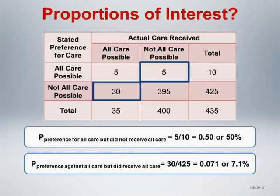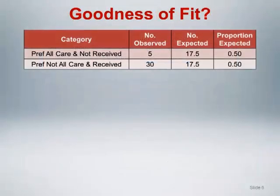If there is no structural discrepancy present in the data, then discrepancies would occur only due to random chance. If this were true, we would expect an equal number of subjects who preferred all care but did not receive it and who did not prefer all care but did receive it. In other words, misclassifications between preference and care received should occur with equal frequency if they occur randomly. So we have two categories of patients, observed cell frequencies for each, and we know that the expected frequency of the two cells should be equal.